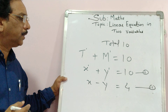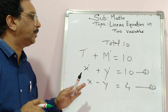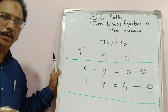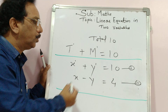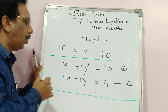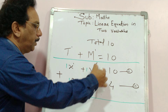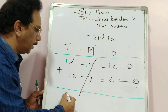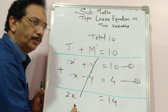Now let us see how to solve these two equations. First of all, write one equation below the other. After writing both equations, you can see that y has a plus sign in one and a minus sign in the other. The coefficient of y is 1 in both, and the coefficient of x is also 1 in both.